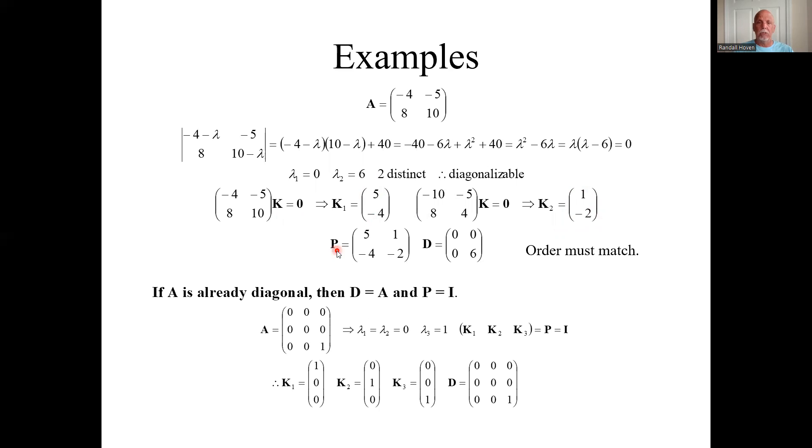In fact, the matrix P is made up of these eigenvectors. So 5 minus 4 there and 1 minus 2 here. That's what P is. And this guy corresponded to that eigenvalue, and this guy on the right corresponded to that eigenvalue 6. So it's 0 there for the first eigenvalue and 6 there for the second. The order of these things must match.